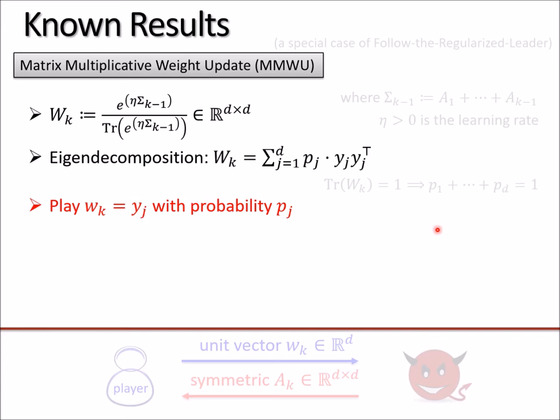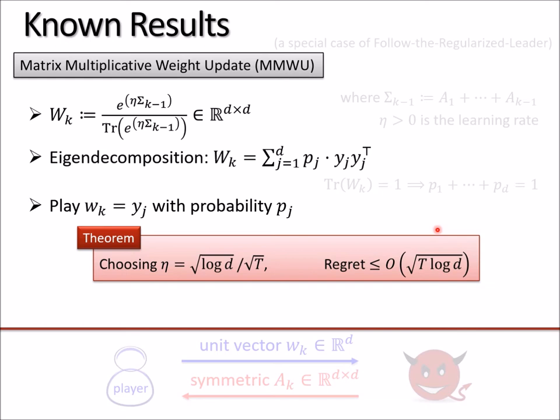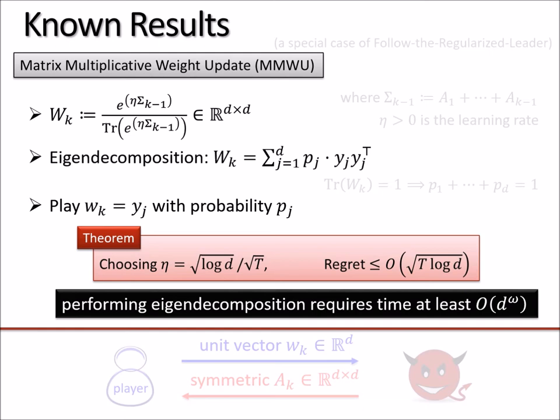Then once you have this exponential, you scale it by the trace. That gives you a matrix W_k that has trace 1. Now the player eigendecomposes W into eigenvectors. Y_j's are orthogonal eigenvectors, and p_j's are eigenvalues. Being trace 1 means all p_j's sum to 1, and therefore the player plays strategy y_j with probability p_j. This is the matrix multiplicative weight update strategy. It is famously known that this strategy obtains up to constant factor optimal regret. The total regret is at most √T log d after you appropriately choose the learning rate. But unfortunately, this strategy runs very slow because you need to eigendecompose the whole matrix.